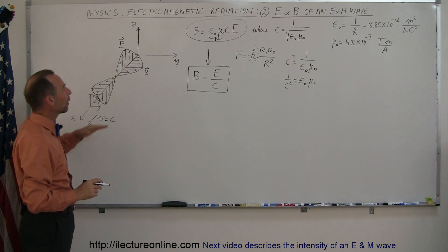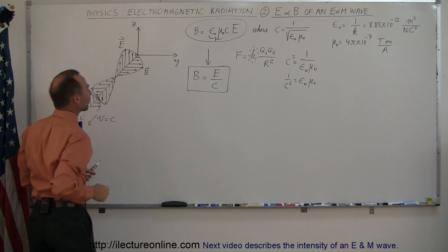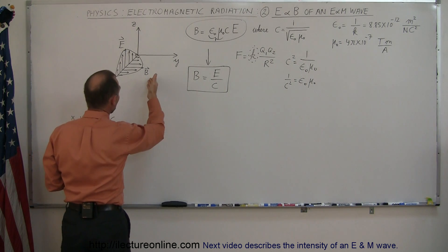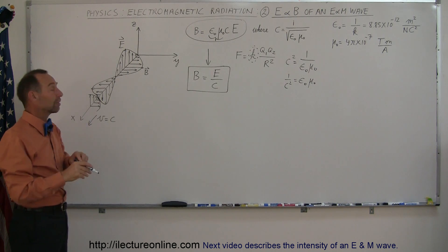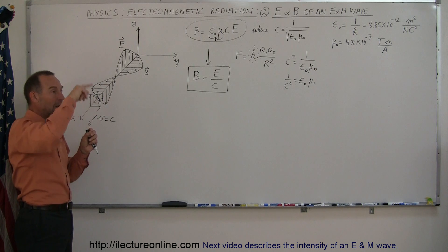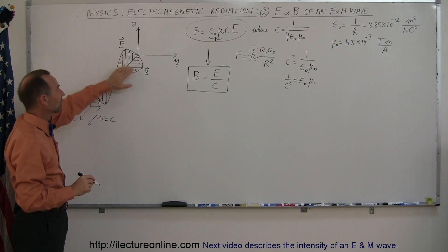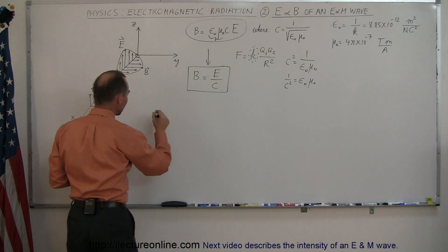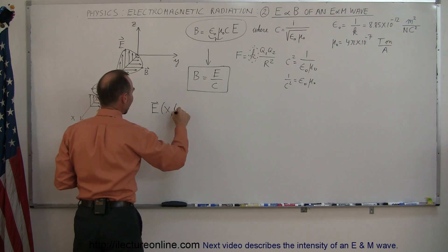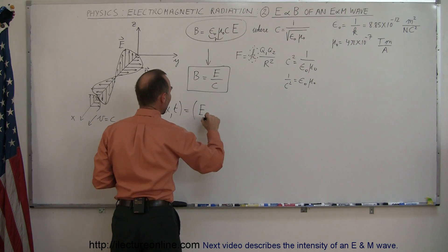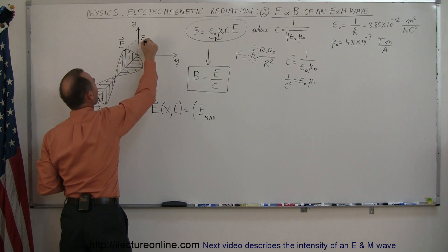To describe the motion of a wave in space, let the velocity be in the positive x direction. The oscillations of the electric field are in the z direction, and the oscillations of the B field are in the y direction. The electric field as a function of position in the x direction and time is equal to e-max — the maximum amplitude of the oscillations — shown here at the peak.